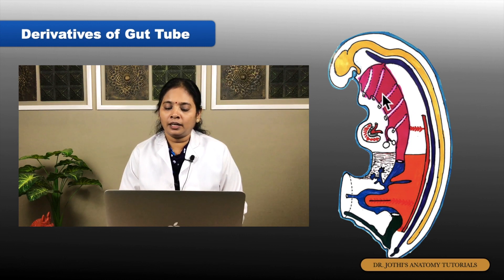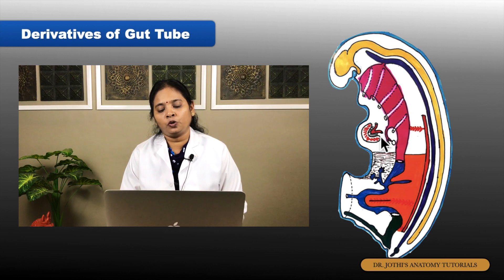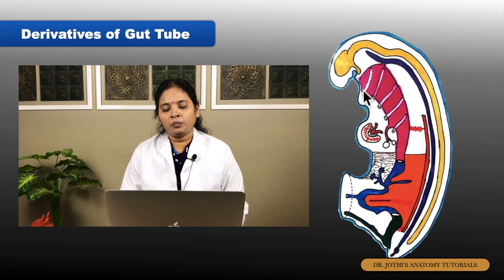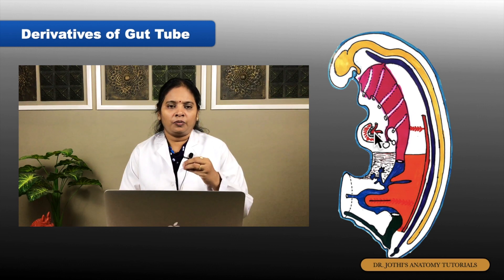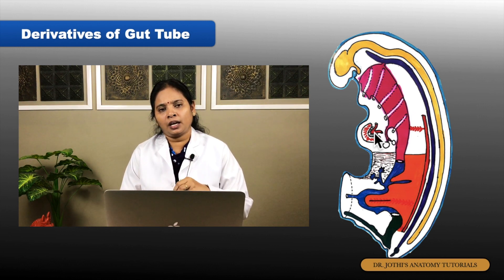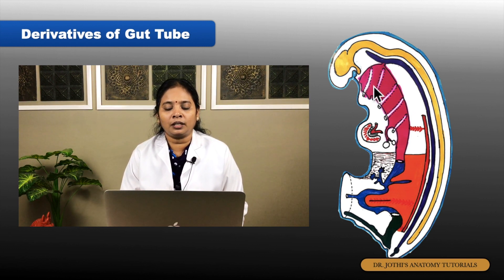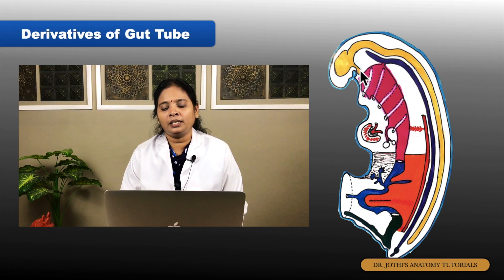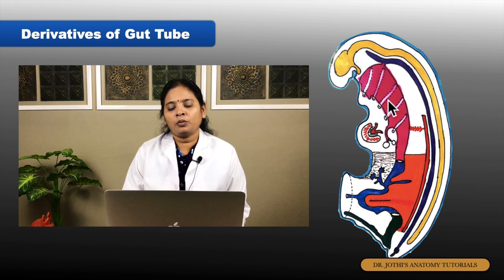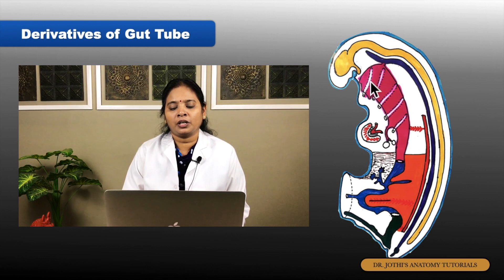Initially, there is only the buccopharyngeal membrane, the pericardial cavity with the heart tube, and the septum transversum — there is no mouth yet. The arrangement is: brain, then oral cavity, then heart. But what about the neck? The neck forms one extra structure. This is the pharyngeal arches. In between the buccopharyngeal membrane and the heart tube, the mesoderm on either side of the foregut is going to form bar-like thickenings called the pharyngeal arches.